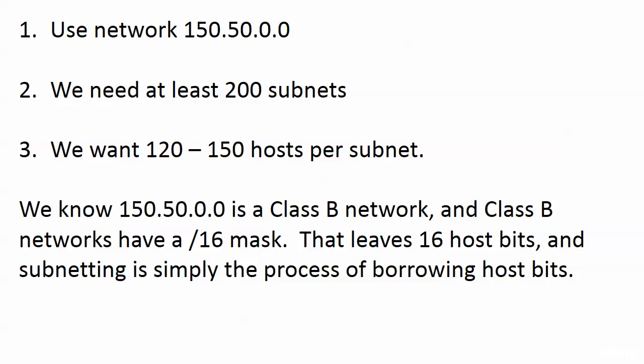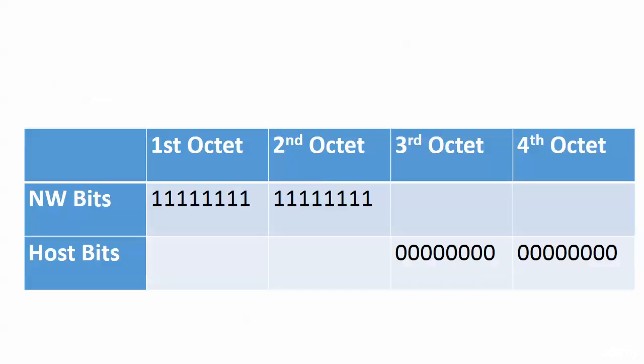Just by looking at that, we know immediately that 150.50.0.0 is a Class B network — that's something the client won't tell you, and Cisco might not either. Class B networks have a 255.255.0.0 network mask, or slash 16. So we have 16 network bits and 16 host bits. And what is subnetting? It is simply the process of borrowing host bits. You're always borrowing zeros, never ones. Here's what our mask looks like right now, and we can proceed from there.